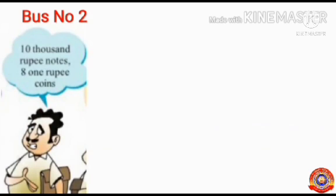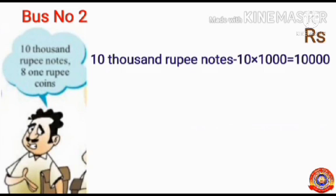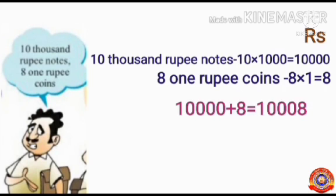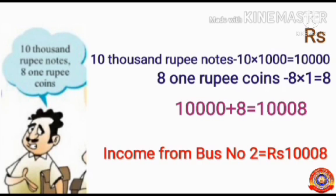Next, let's find out the income from bus number 2. Bus number 2 got 10 one-thousand rupee notes and 8 one-rupee coins. For 10 one-thousand rupee notes: 10 × 1,000 = 10,000. For 8 one-rupee coins: 8 × 1 = 8. Then, add these amounts together: 10,000 + 8 = 10,008. So the income from bus number 2 equals ₹10,008.